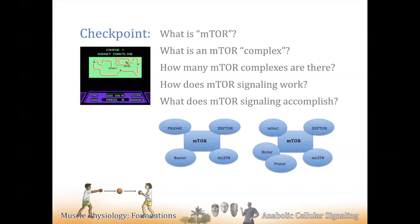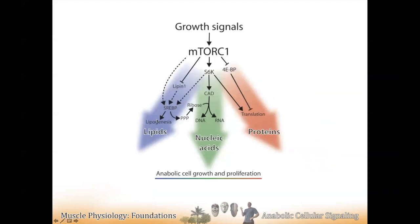Complex two is easier to inhibit, and complex one is actually downstream from complex two. One of the things complex two does is activate PKB, and PKB is upstream from complex one — it's inhibiting tuberin, which was inhibiting Rheb, and now Rheb is turned on. Combined, complex two does a bunch of stuff you don't really need to know for the test. What we're going to talk about is complex one, which is the core regulator of muscle metabolism and protein turnover.